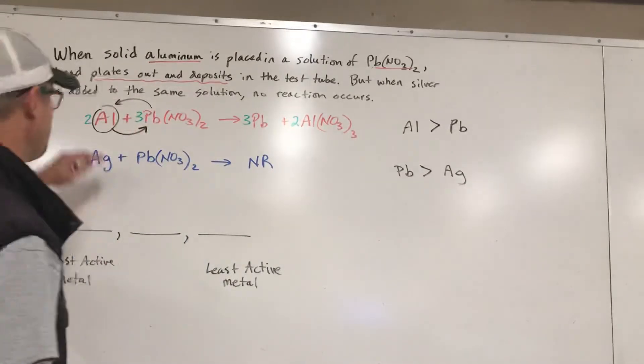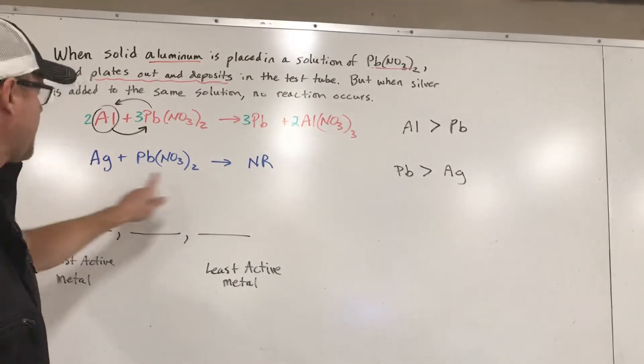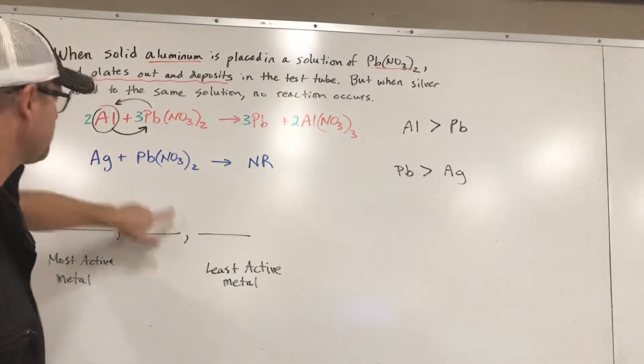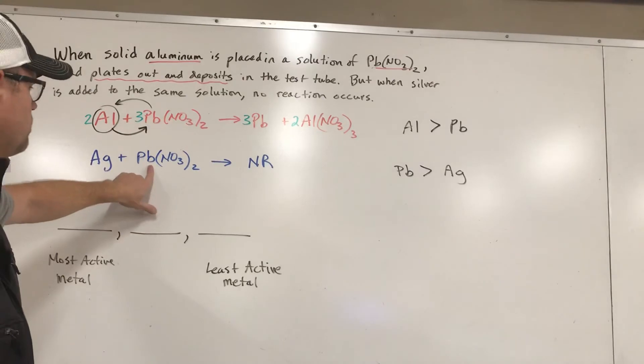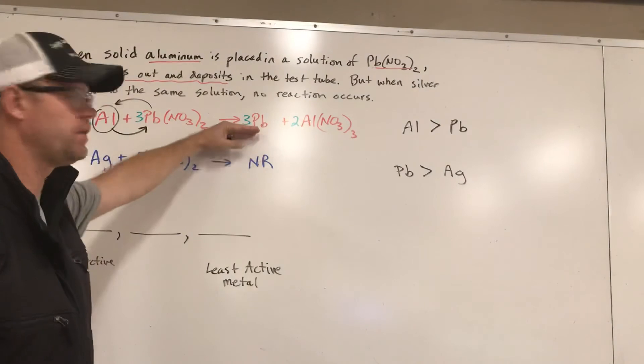So what this tells us is a reaction that happens tells us which one of these is stronger, but a reaction that doesn't happen gives us just as much information. A reaction that doesn't occur lets us know that the one that was dissolved in the solution must be the stronger metal. So you can learn just as much from a no reaction as you can from one that exists.